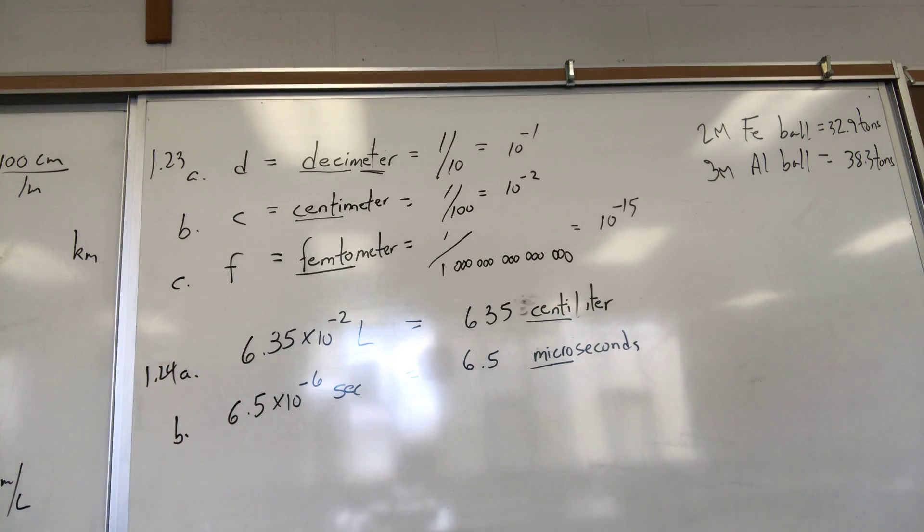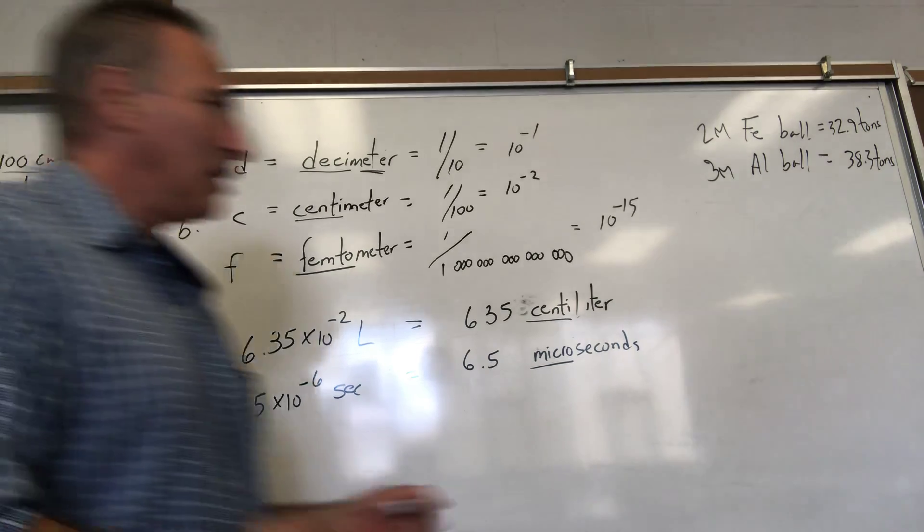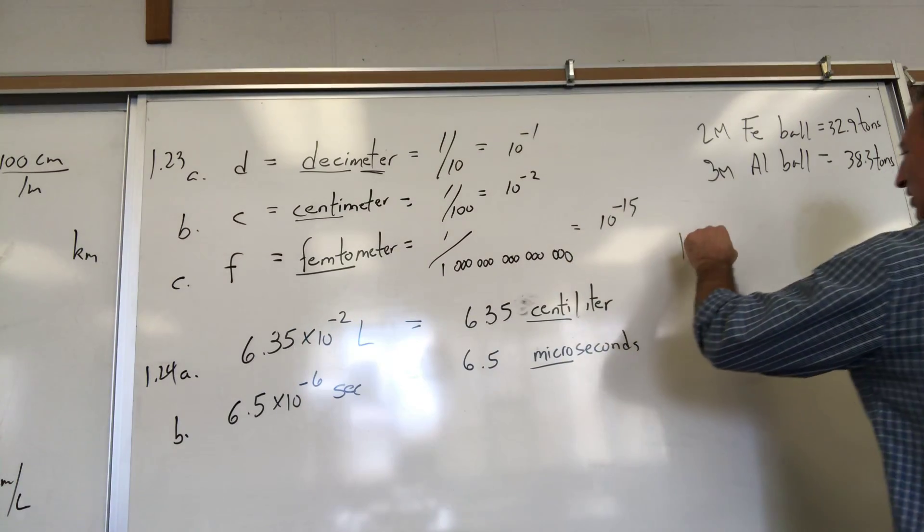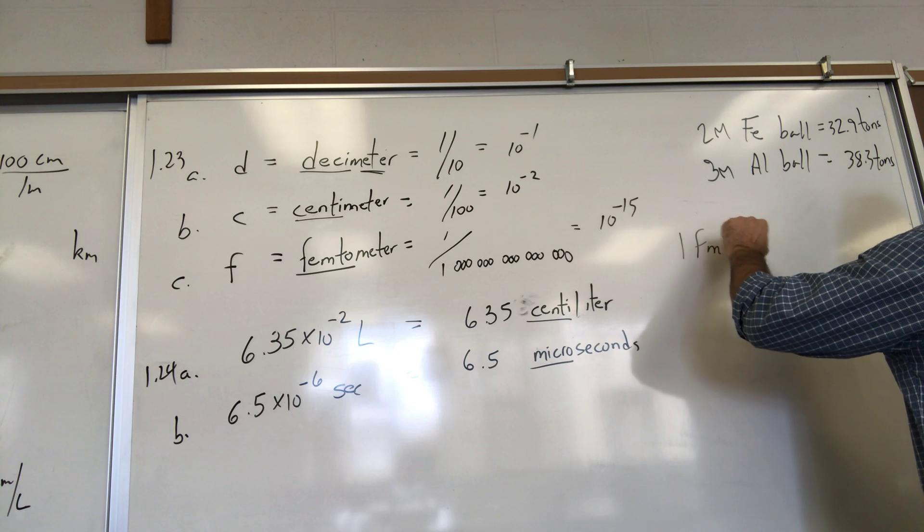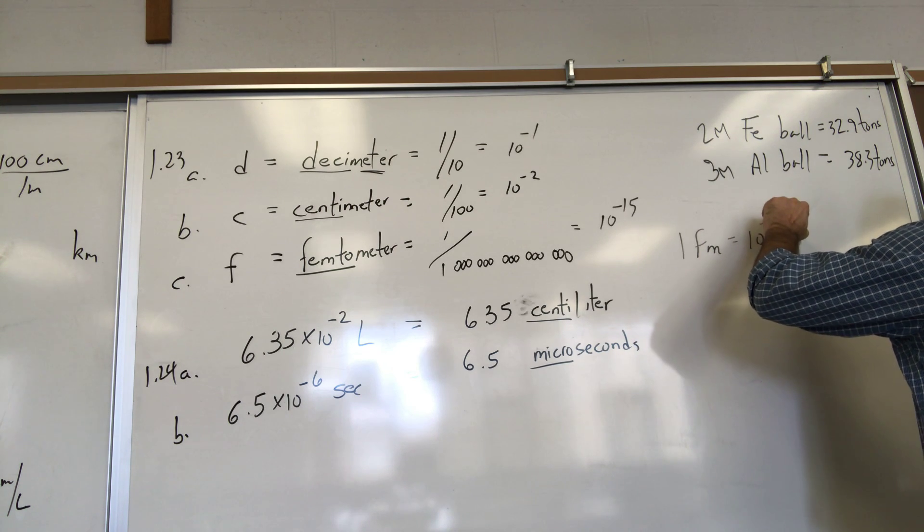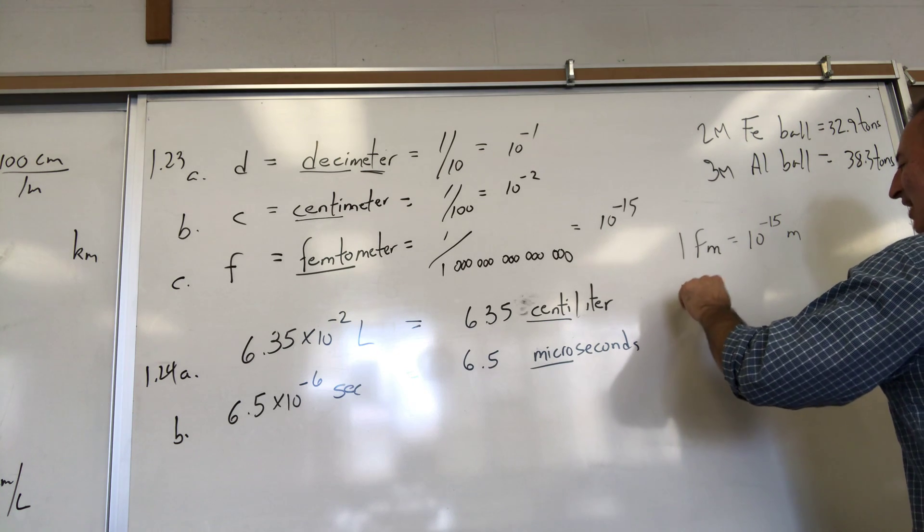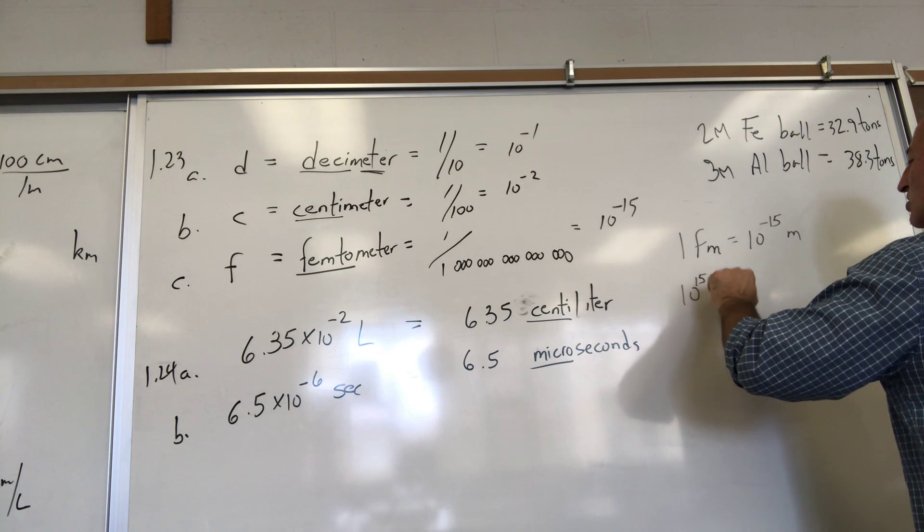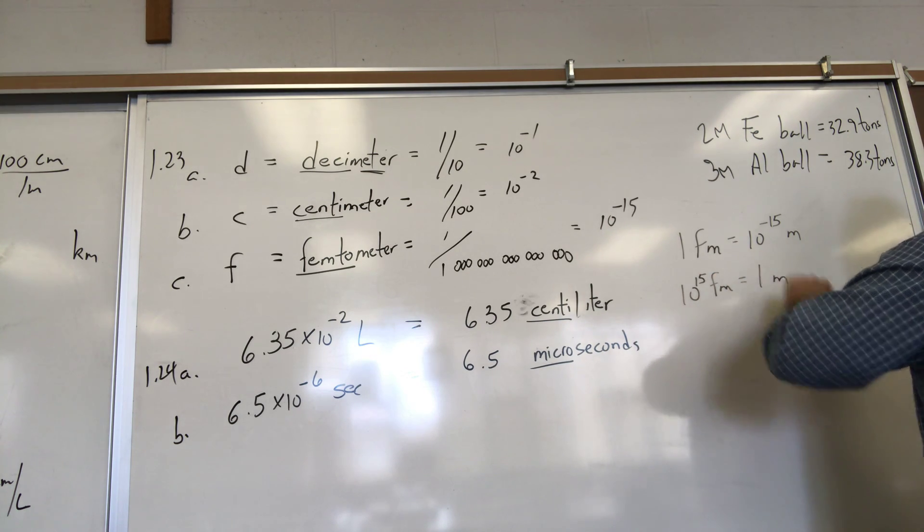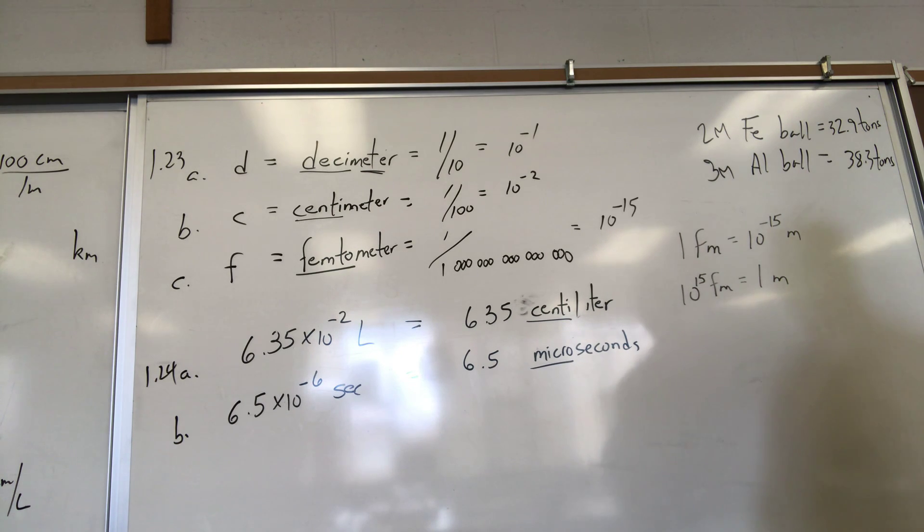You can use both of those relations to do calculations, whatever you feel more comfortable with. The math always works out as long as you keep the numbers straight. So one femtometer is 10 to the negative 15 of a meter, or 10 to the 15 femtometers equals one meter.